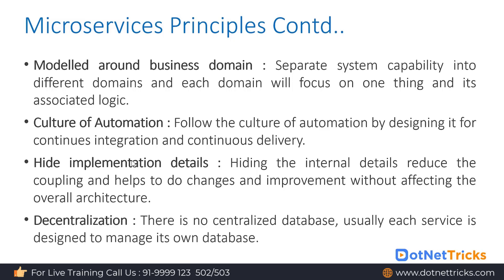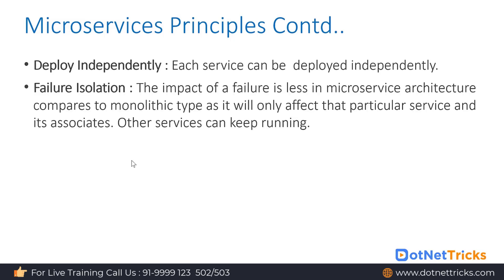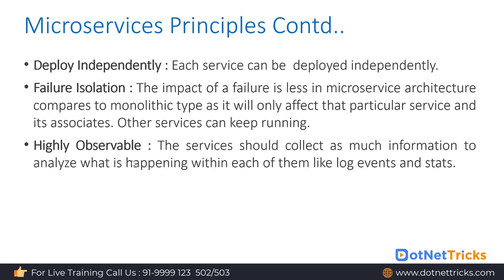The next principle is decentralization — there is no centralized database. Each service has its own database, unlike monolithic applications which have a centralized database. The next principle is deploy independently — each service can be deployed on its own. Failure isolation means the impact of failure is limited; if one service fails, it should not impact the other services. Highly observable means services should collect as much information as possible — logging events, activities, and statistics — so issues can be analyzed and debugged.